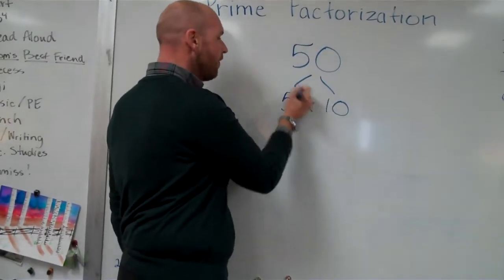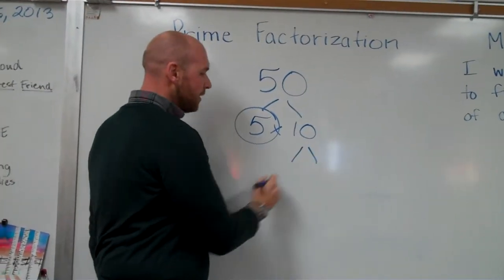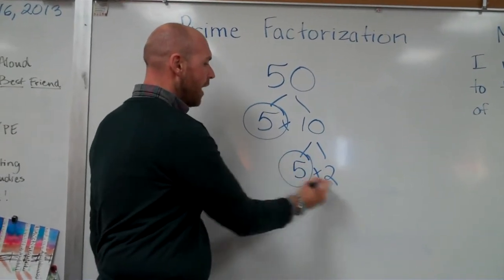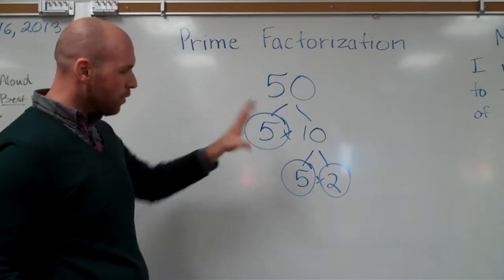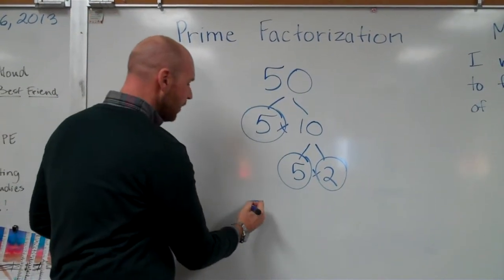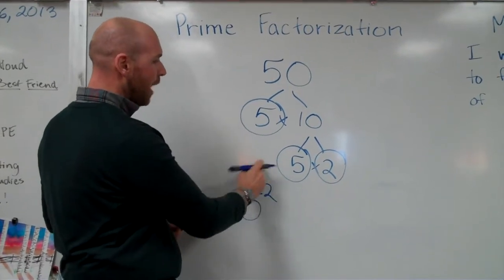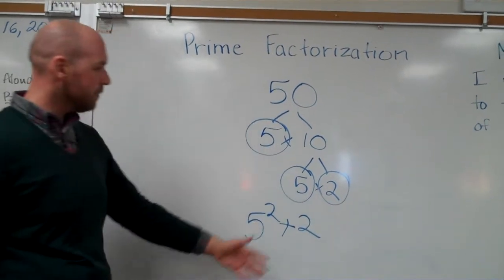5 is already prime. I'm good to go. Break apart 10. 5 times 2. I've got a prime. I've got a prime. I've got a prime. I'm good to go. All I need to do is wrap it up. 5 squared or 5 to the second power because I've got two 5s times 2. Awesome.